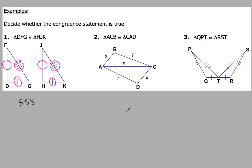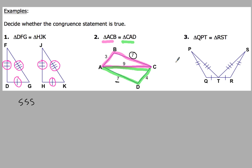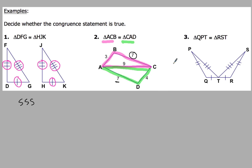In example 2, we've got triangle ACB congruent to triangle CAD. Breaking those triangles apart — they share side AC, which is congruent to itself by the reflexive property. We've also got side AD congruent to side BC, both labeled 7. But when we look at the third side, AB and side DC have different numbers, so they're not the same. Since they're not the same, this congruent statement is false.